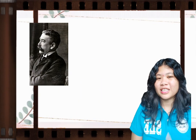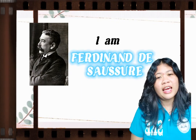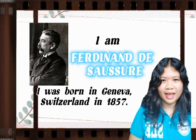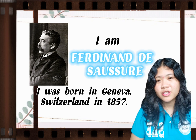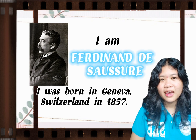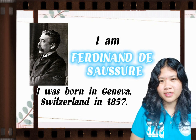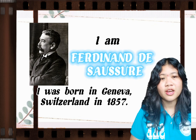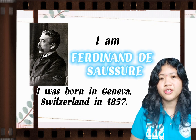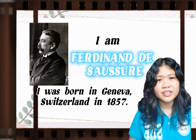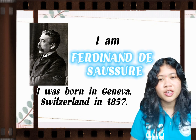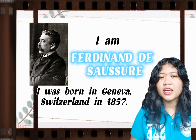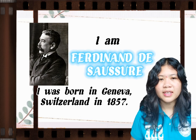Who is Ferdinand de Saussure? He was a linguist, semiotician, and philosopher from Switzerland, born in Geneva in 1857. Ferdinand de Saussure was interested in languages early in his life — by age 15 he had learned Greek, French, German, English, and Latin. He also wrote an essay on languages at that age.